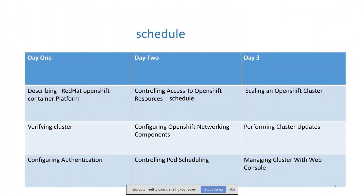This training program is scheduled over four days — for online virtual training, it is four days rather than three days in a classroom. The curriculum starts with describing the Red Hat OpenShift container platform: what is OpenShift, then verifying the cluster — checking operating system resources, node health, whether all nodes are registered, and how to troubleshoot application errors.